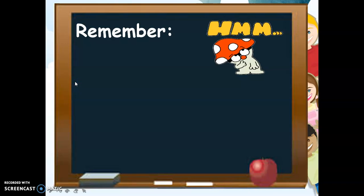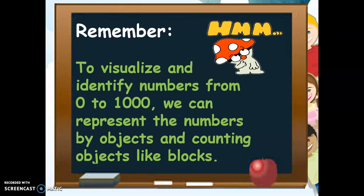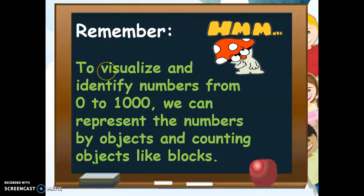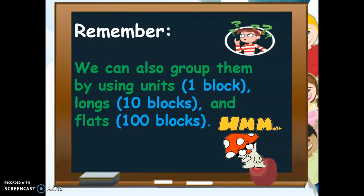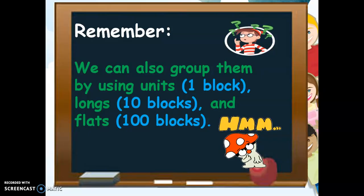Very good. Now, always remember that to visualize and identify numbers from 0 to 1,000, we can represent the numbers by objects and counting objects like blocks, just like what we did. We can also group them by using units — for a unit, it's just 1 block; for longs, it's just 10 blocks; and for flats, we have 100 blocks.